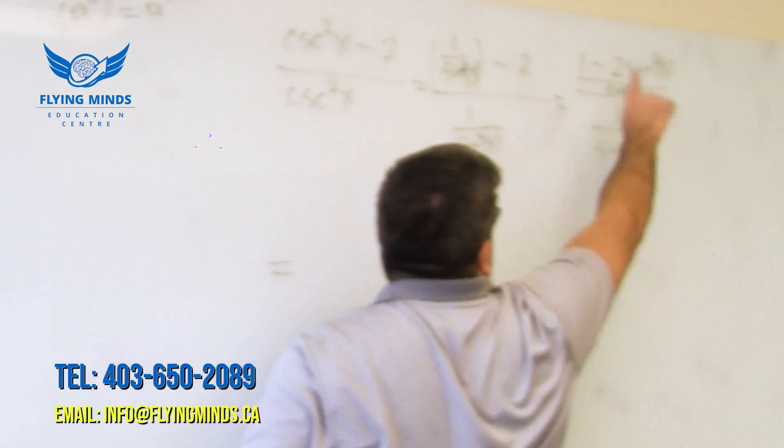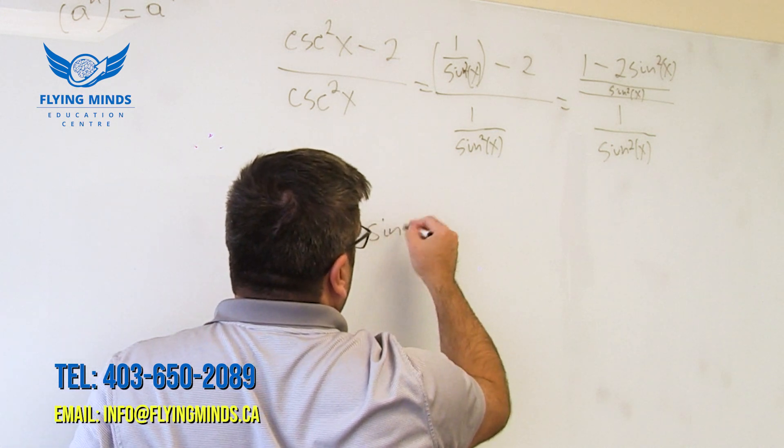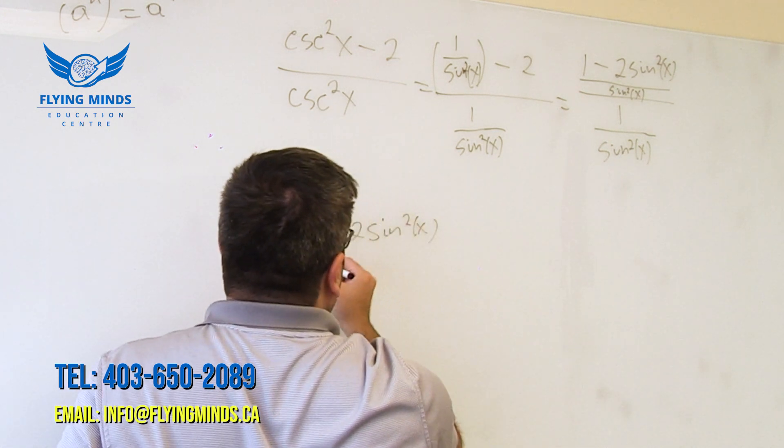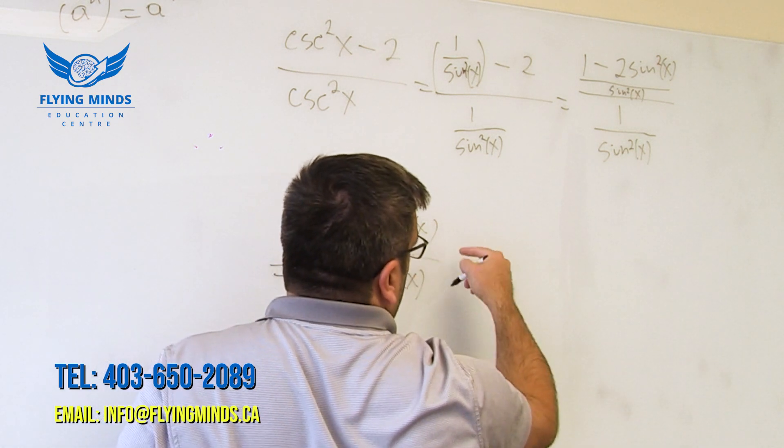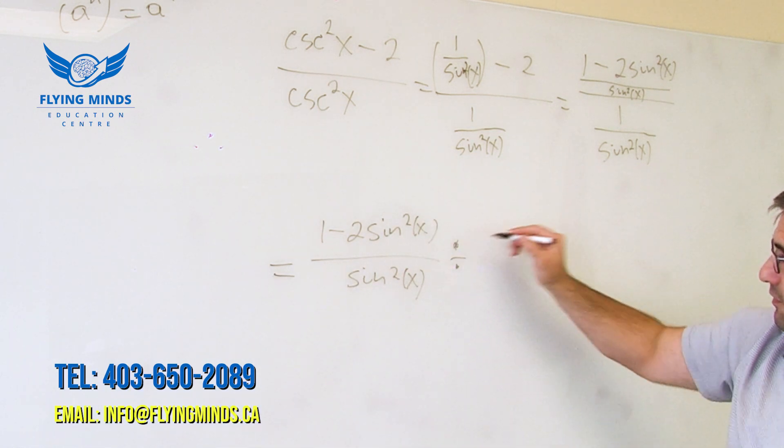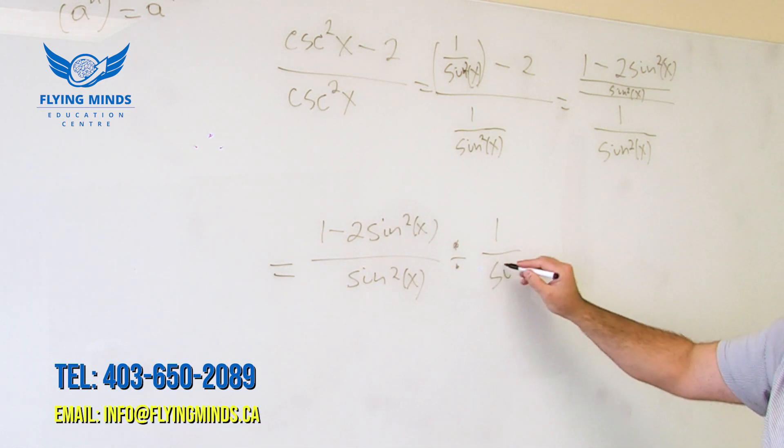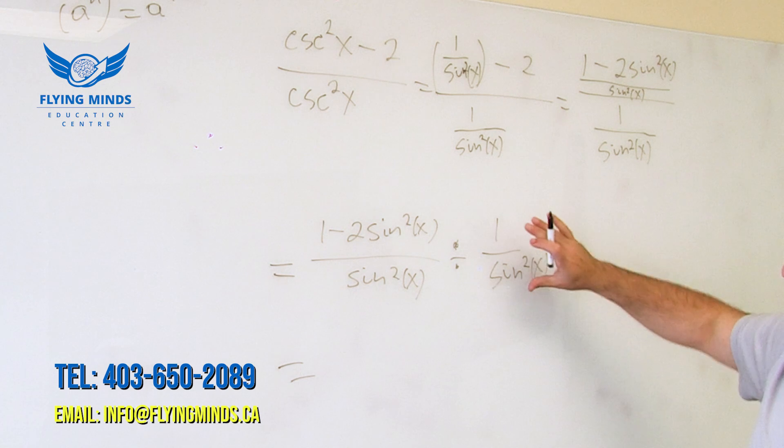So we divide two fractions, right? So I'm just going to write in more details so everybody can understand. So we divide, right? And then because we have division, we'll replace it with multiplication.